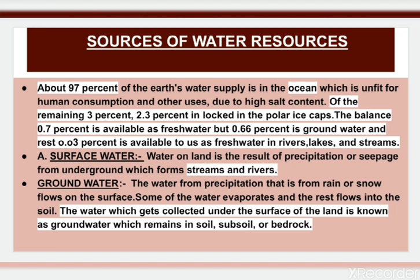Surface water is the water on land as a result of precipitation or seepage from underground, which forms streams and rivers.